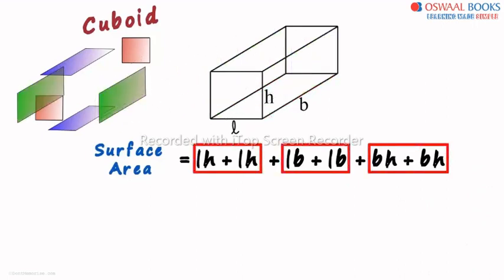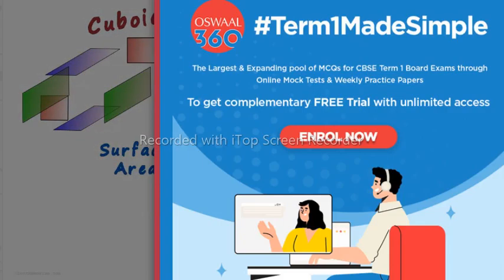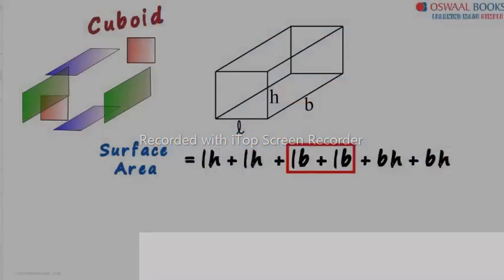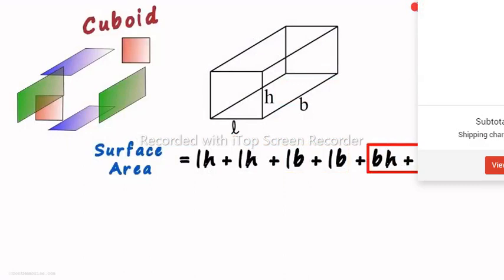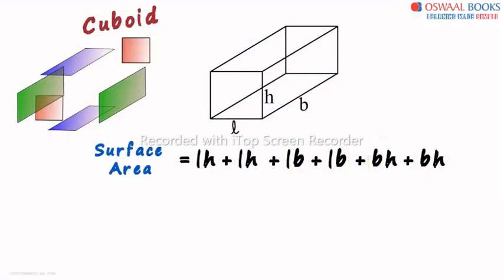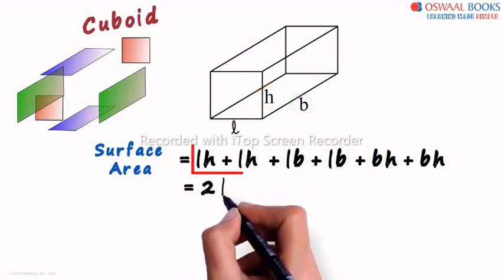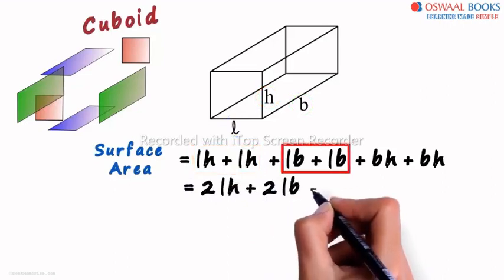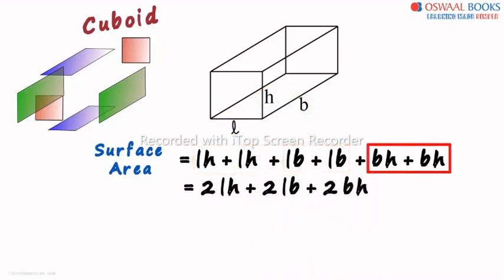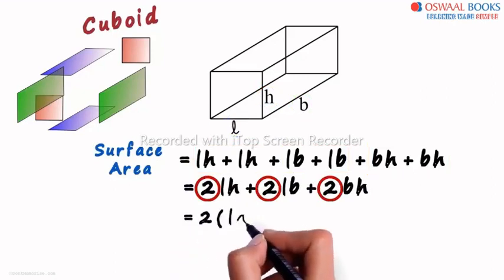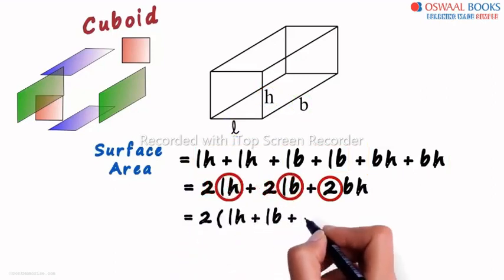Look at each group. This will be 2LH. This will be 2LB, and this will be 2BH. So for a cuboid with L, B and H as dimensions, the surface area will equal 2LH plus 2LB plus 2BH. As 2 is a common factor to all the terms, we write it as 2 multiplied by LH plus LB plus BH.